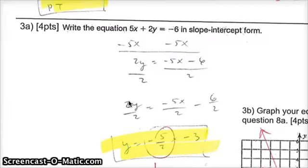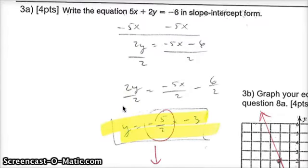Question number 3A. Write the equation 5x plus 2y equals negative 6 in slope intercept form. Same thing as we did in the last video. You're trying to get y by itself here. That's what it means to be slope intercept form.